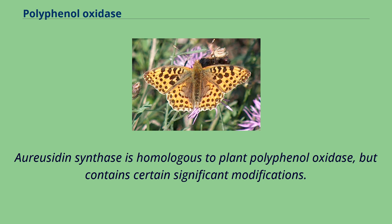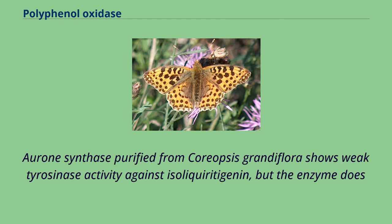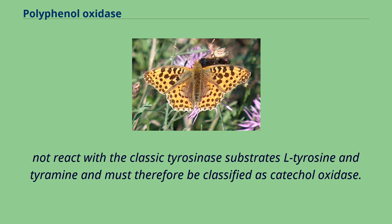Aurone synthase is homologous to plant polyphenol oxidase, but contains certain significant modifications. Aurone synthase catalyzes the formation of aurones. Aurone synthase purified from Coreopsis grandiflora shows weak tyrosinase activity against isoliquiritigenin, but the enzyme does not react with the classic tyrosinase substrates L-tyrosine and tyramine, and must therefore be classified as catechol oxidase.